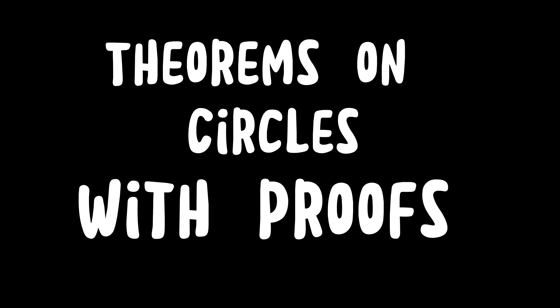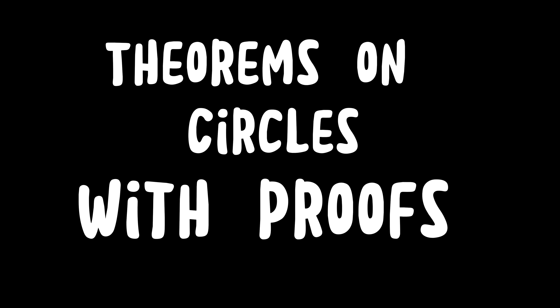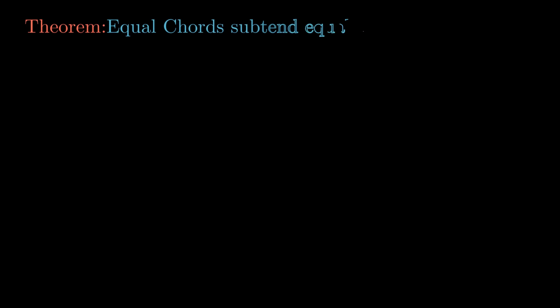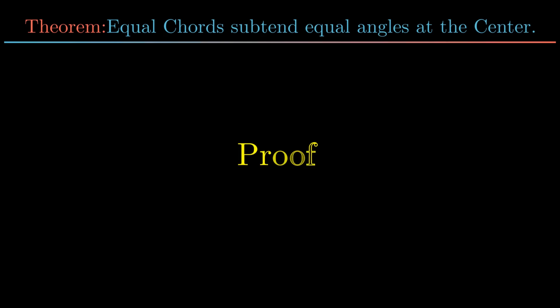In this video we will understand various forms related to circles and their proofs. Let's continue with the first one: equal chords subtend equal angles at the center.